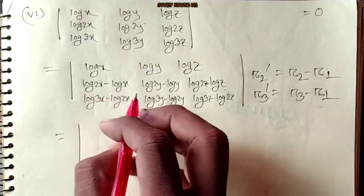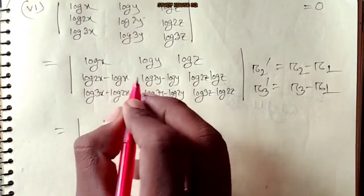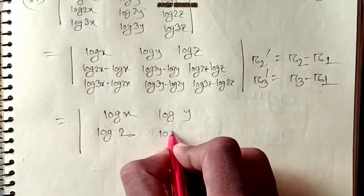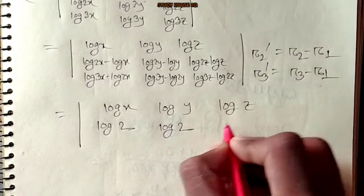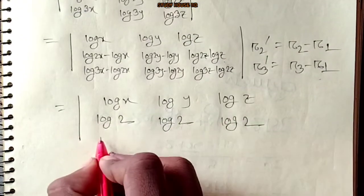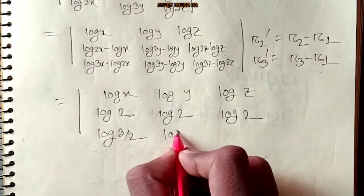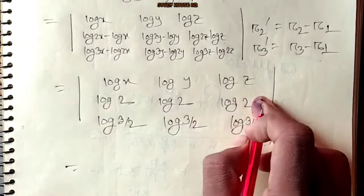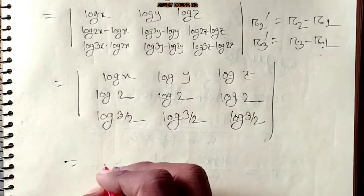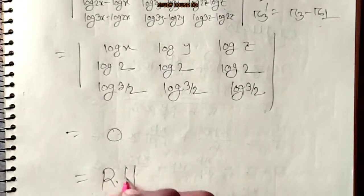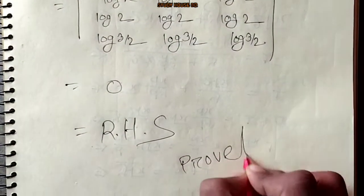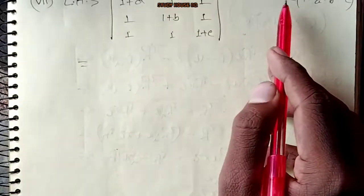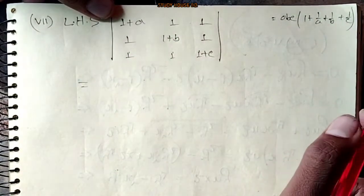R3 minus R1 is done. So here in the column we have log x. If we add log 2y it will cancel. Log will cancel. After cancellation, log 3y divided by 2 will remain. Same will happen.